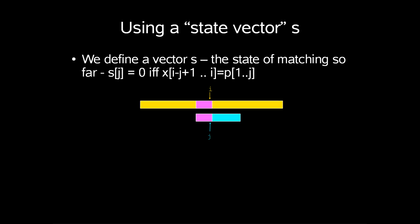This is done by using what is called a state vector. So we define this vector s, which depends on i. The state of matching so far, s[j] is 0 if and only if index i-j+1 up to i match the pattern 1 up to j.